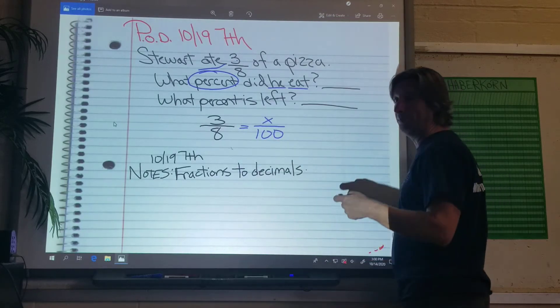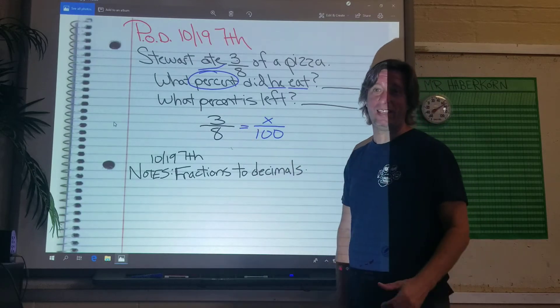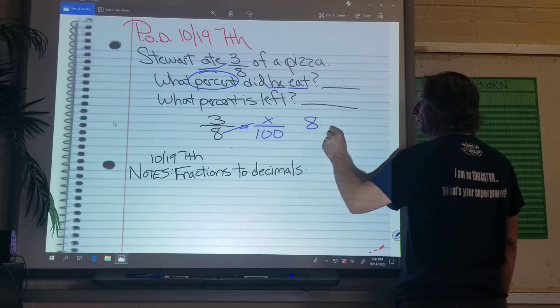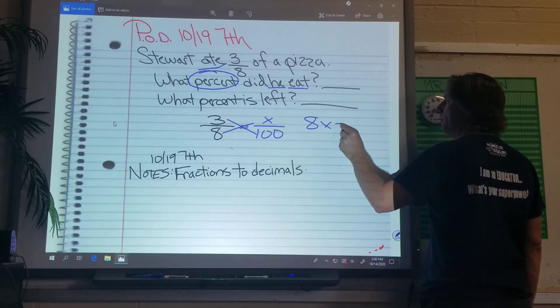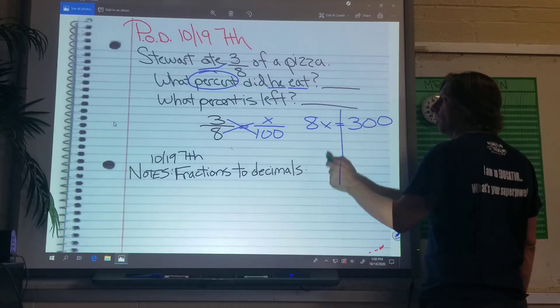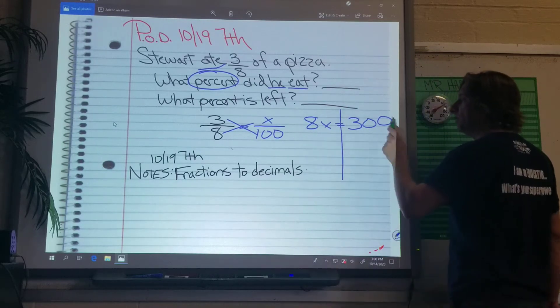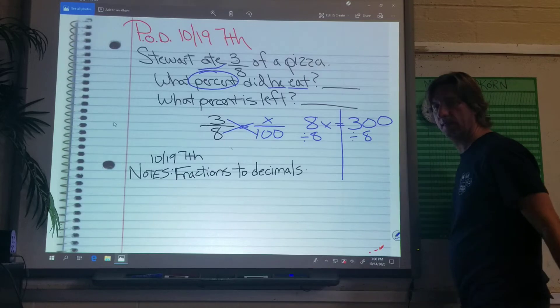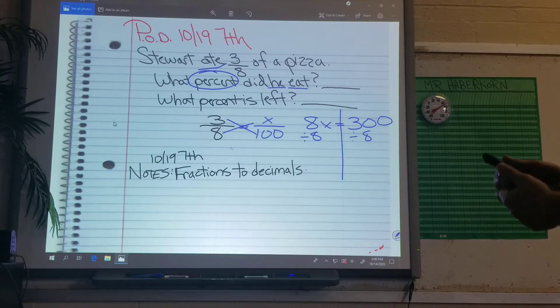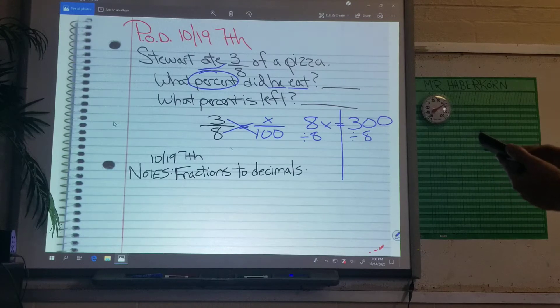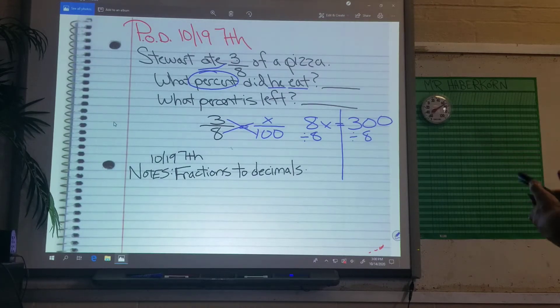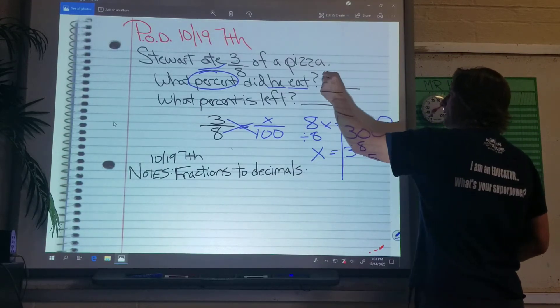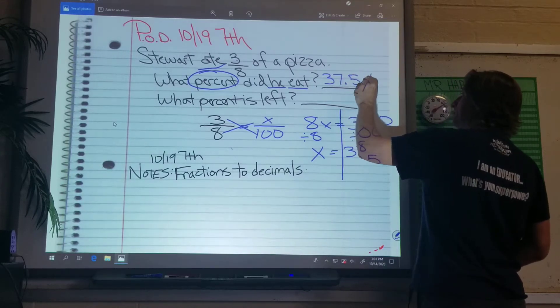Cross multiply. Mr. Haverkorn would eat a lot more than 3 pieces. I'd probably eat 6. I like to eat pizza. Alright, 8x equals 300, right? We're getting really good at this cross multiplying. We are all proportion champions now. We can solve these algebra equations with our eyes closed. Divide by 8. Divide by 8. And I get... This is going to be a little bit tricky. 37.5.